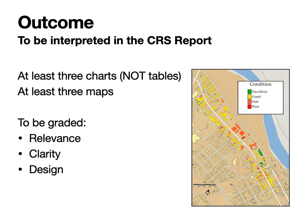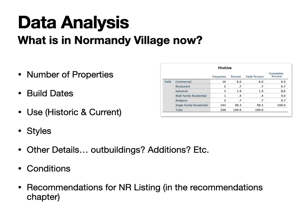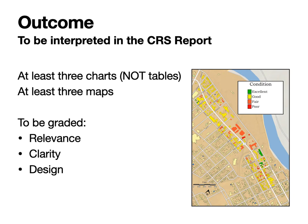Sometimes it makes sense to use frequency; sometimes it makes sense to use valid percent. In your CRS report, you'll need at least three charts and at least three maps. I'll be evaluating whether they're relevant to your analysis, how clear they are, and how nice they look. Here you can see a map showing the condition of buildings from another class — the upper Princess Anne Street corridor. They used a low-tech method: the Fred GIS map edited in Photoshop, which is what most of you will do. For some things you'll do charts; for others you'll do maps. You must have charts and maps — not just tables — because lots of people don't know how to read a table properly.